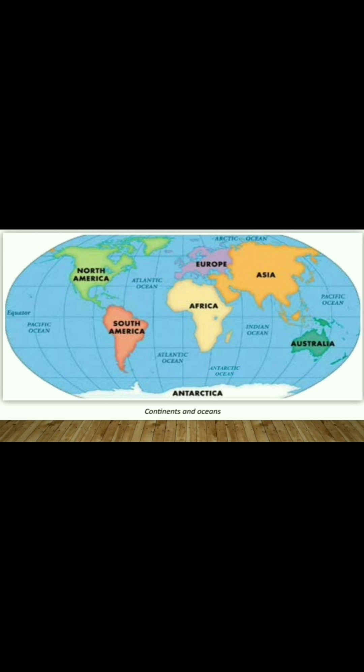Here is a map of the world. You can see the various continents and oceans clearly in this map — Asia, which is the largest continent, then Europe, Africa, Australia, North America, South America, and Antarctica in the south.